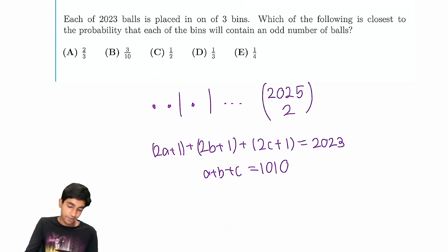So how many solutions are there to this equation? Of course, a, b, and c are non-negative integers. Again, stars and bars. We can imagine 1010 stars and two bars. So 1012 choose 2.